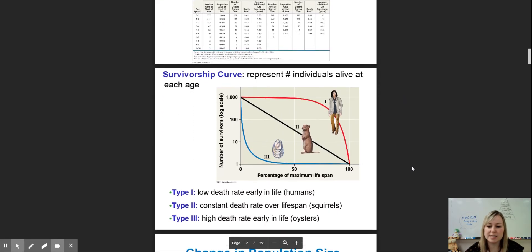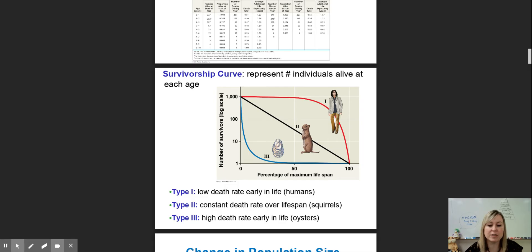Survivorship curves represent the number of individuals alive during each age of that organism's life. A Type 1 survivorship curve is what we as humans experience. We have very high parental care in our young ages, which means there is a large number of survivals at young ages. A lot of our kids live to reproductive age because we care for them. Then as we age, survivorship levels off and eventually goes down as we reach our max lifespan.